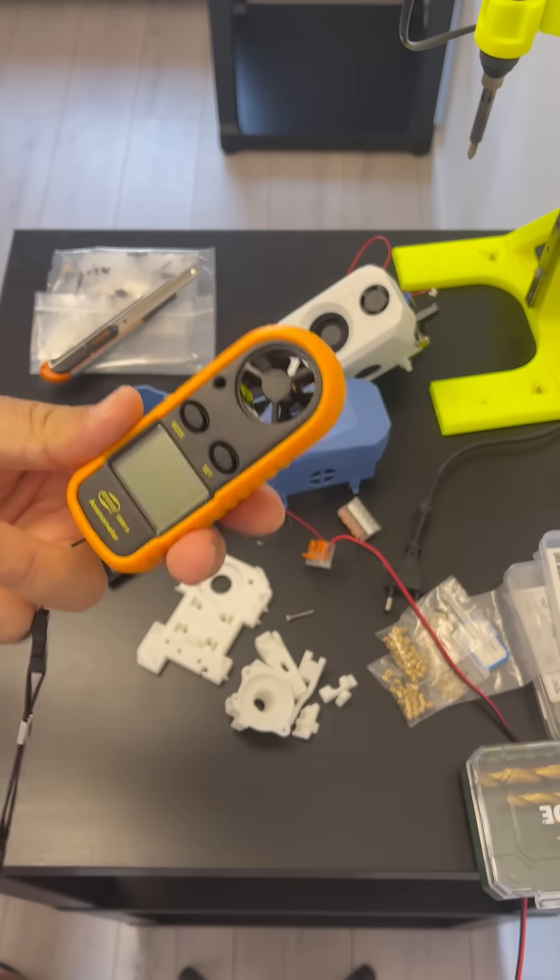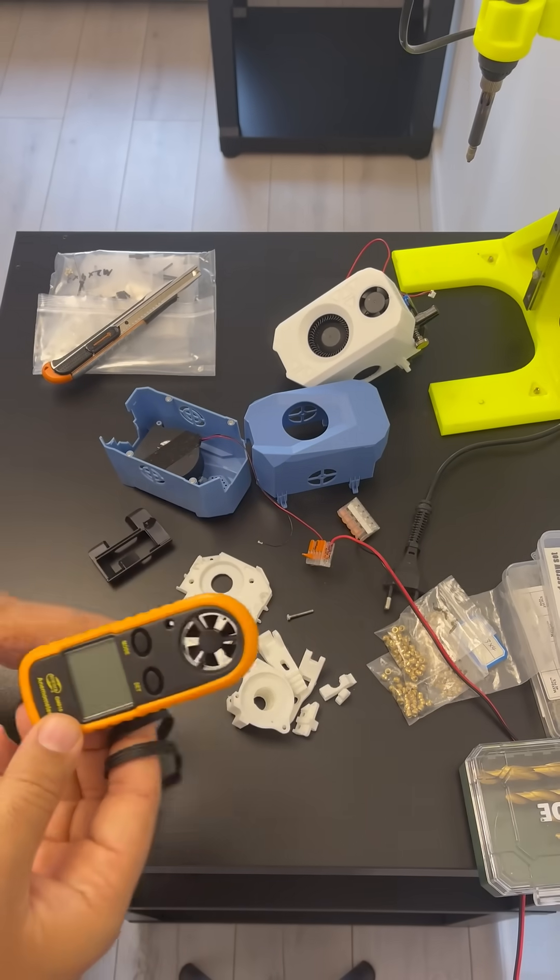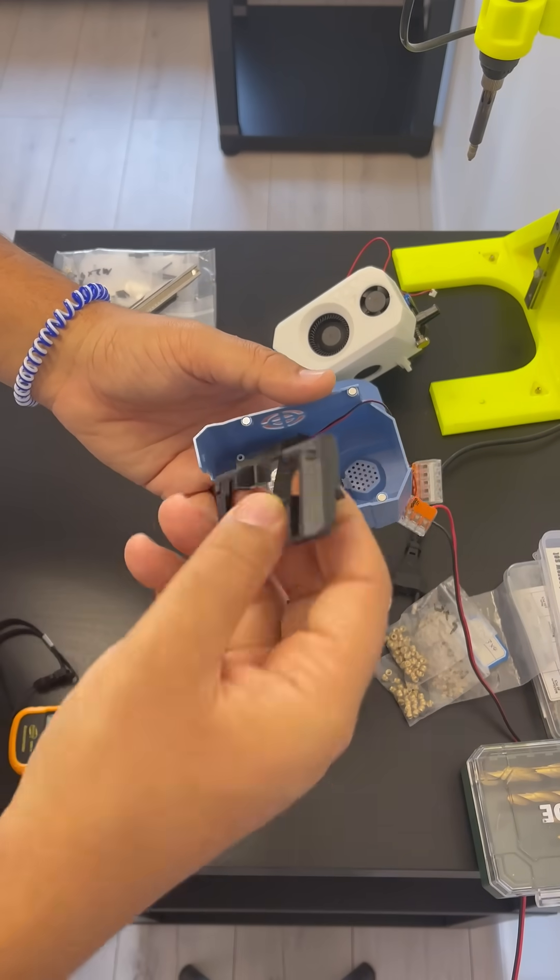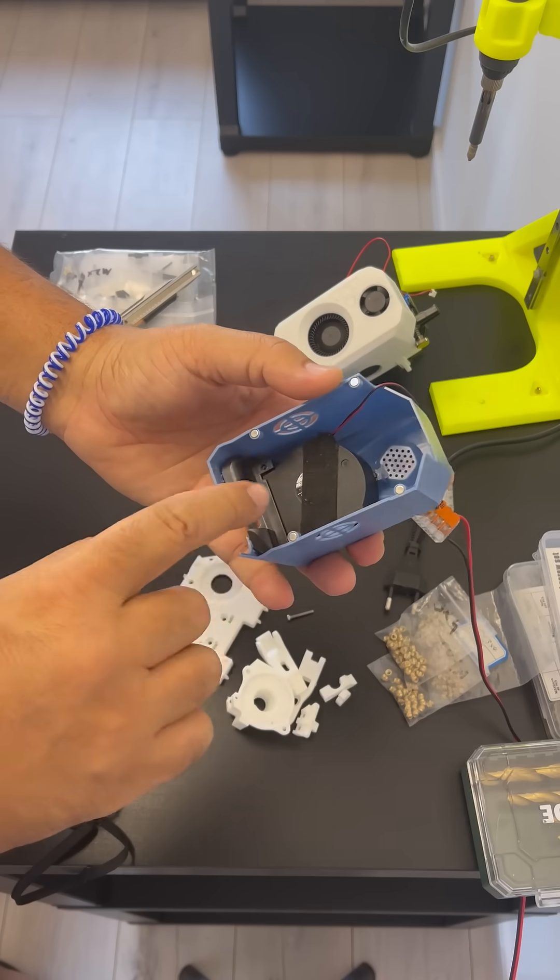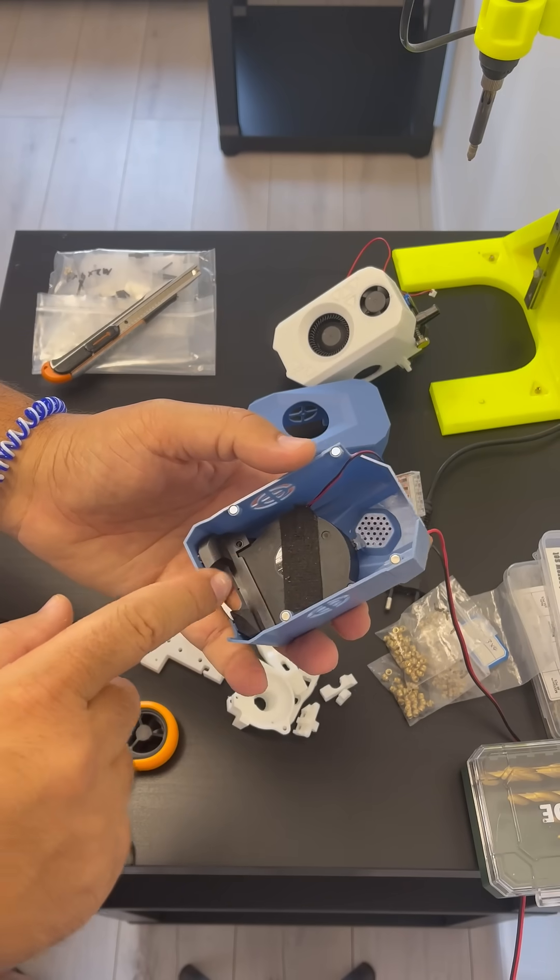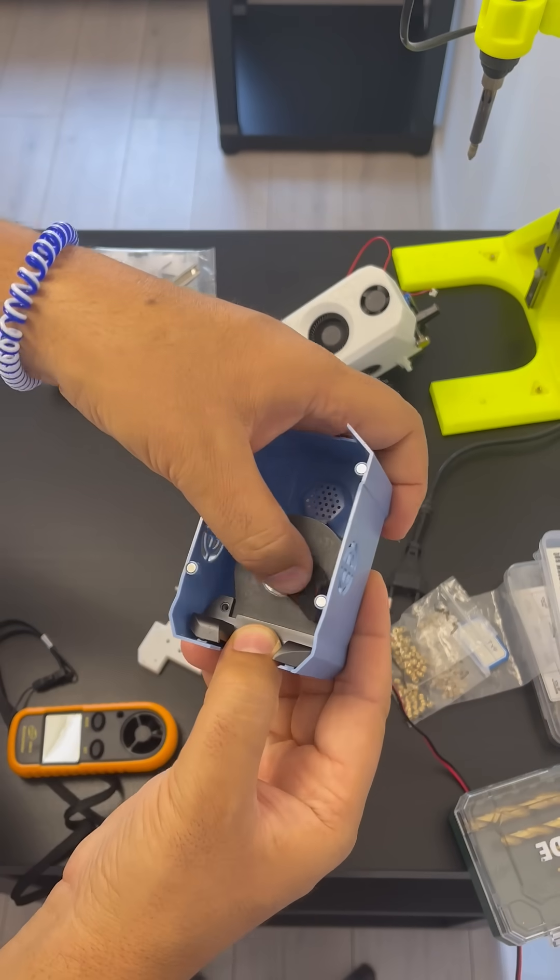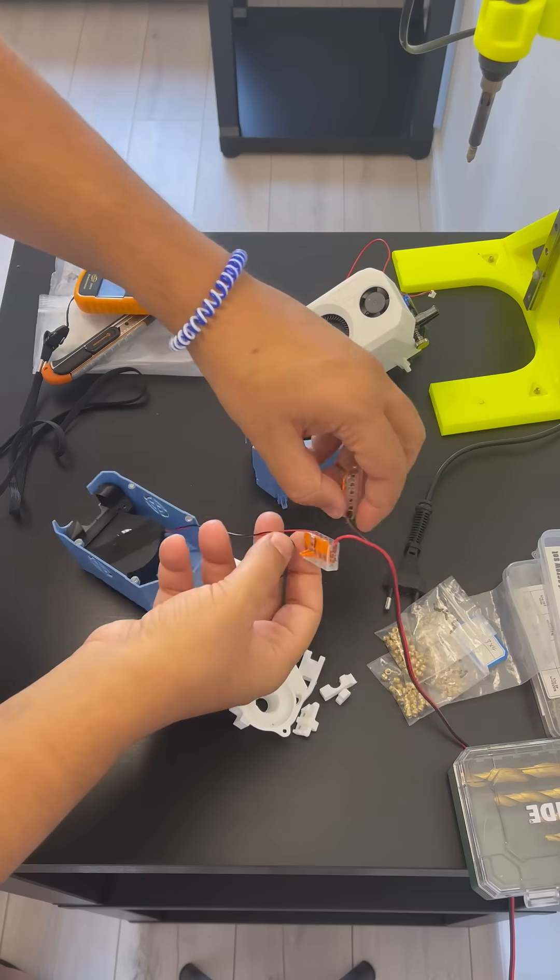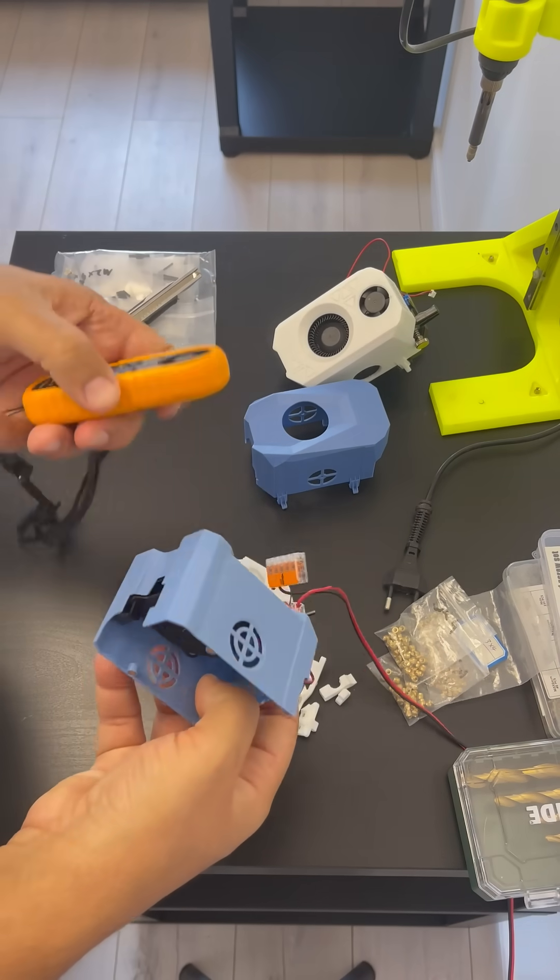Here we have the same anemometer that we used to measure the flow on Spartacus. We will measure the flow on the different tool heads. You can see this is the fan that came with the sv08. Here you can see the details - it's the same fan found in the sv08. Let's start, connect to 24 volts, and measure.